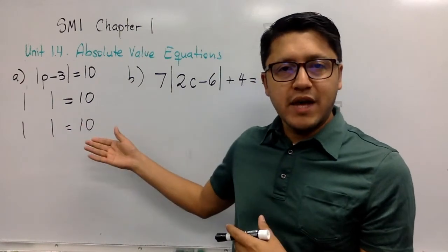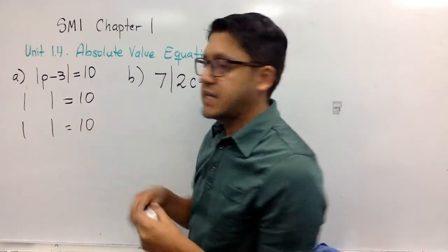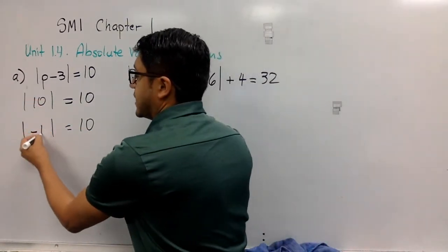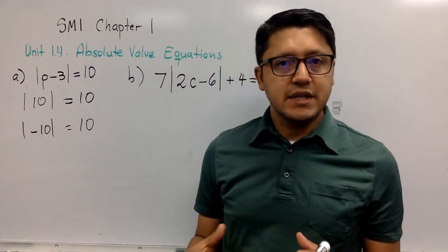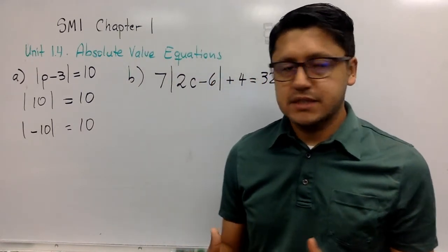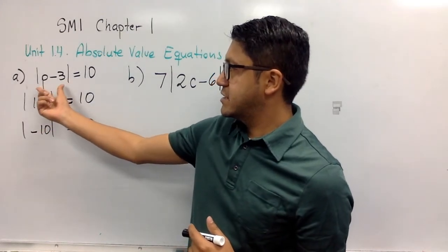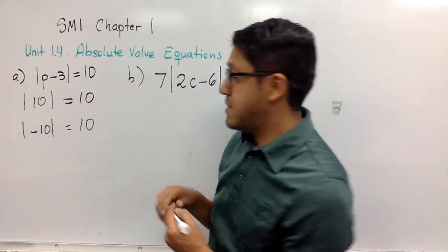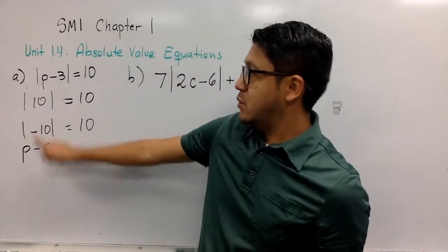The two options are that what is inside is 10, but also what is inside is negative 10. With that in mind, now you can say if the absolute value of this expression is 10, it means that this expression p minus 3 has to be equal to 10 or it can also be equal to negative 10.